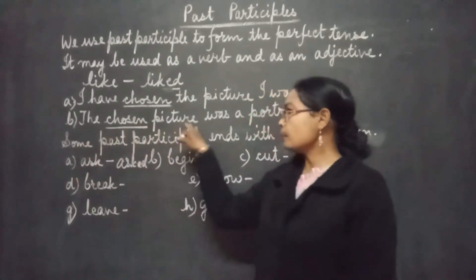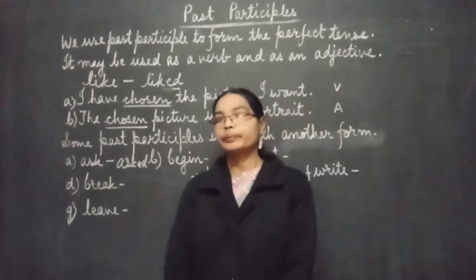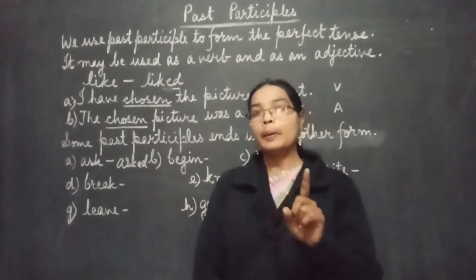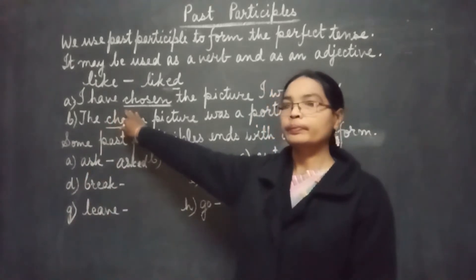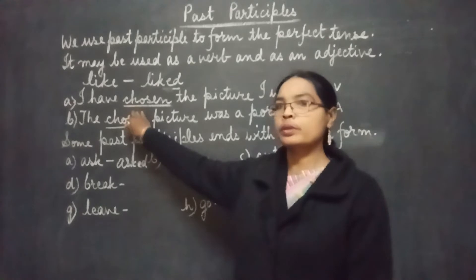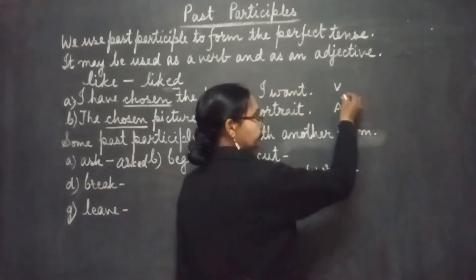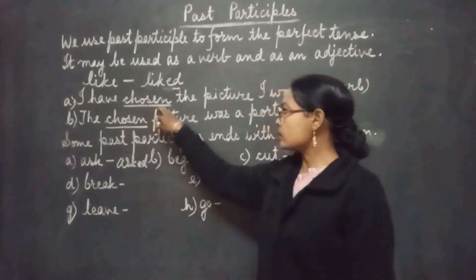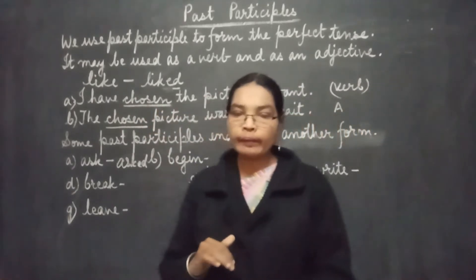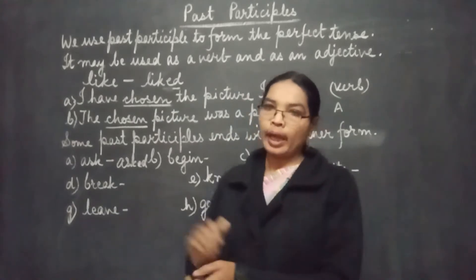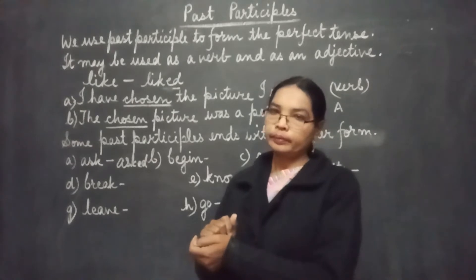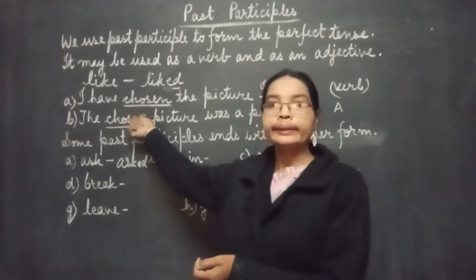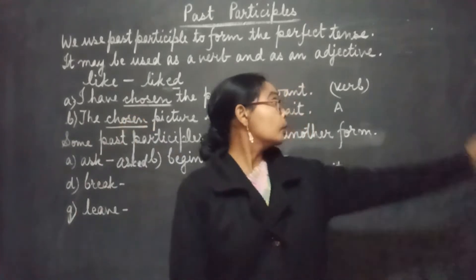Example number B: 'The chosen picture was a portrait.' Here also, the word 'chosen' belongs to our past participle. But students, in the first sentence where we have 'chosen', it works like a verb. 'I have chosen the picture I want' — I have chosen and selected, I have done some work.